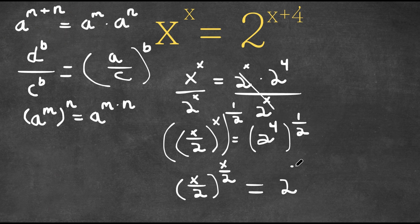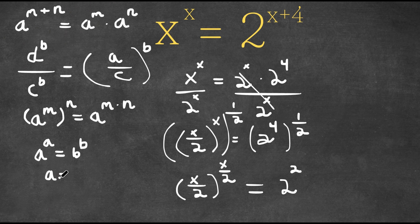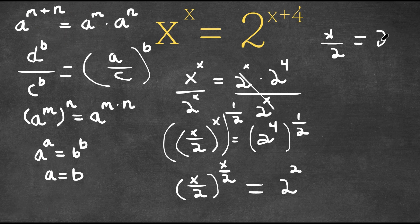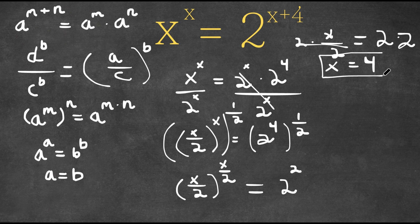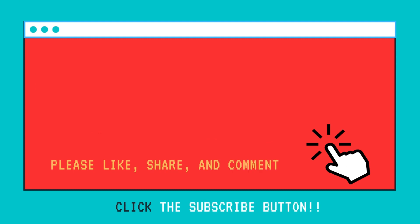Now if we have something in the form a to the power of a is equal to b to the power of b, then this means that a is equal to b. So this means that x over 2 is equal to 2. Multiplying both sides by 2, the 2s cancel out and x is equal to 2 times 2, which is 4. So x equals 4 is our answer.